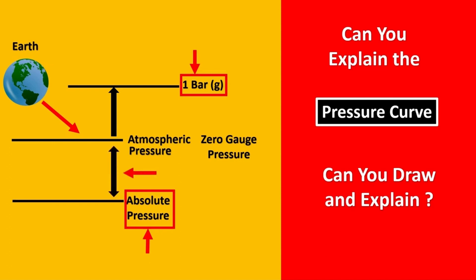That means this entire area is nothing but vacuum, and this point here is called full vacuum. At full vacuum, you will have minus one bar gauge if you talk in gauge terms, or in psi it will be minus 14.7 psig.